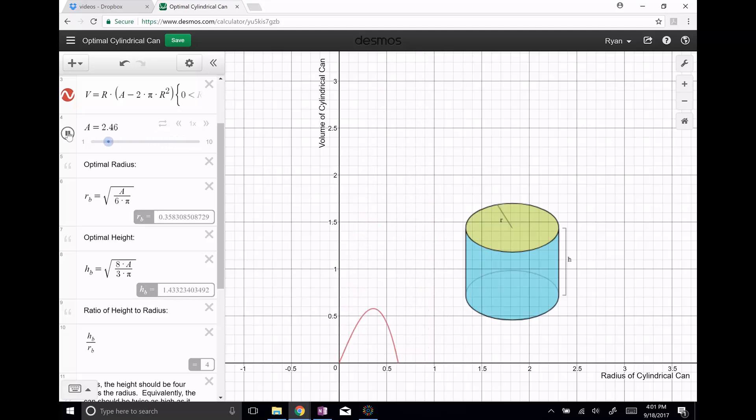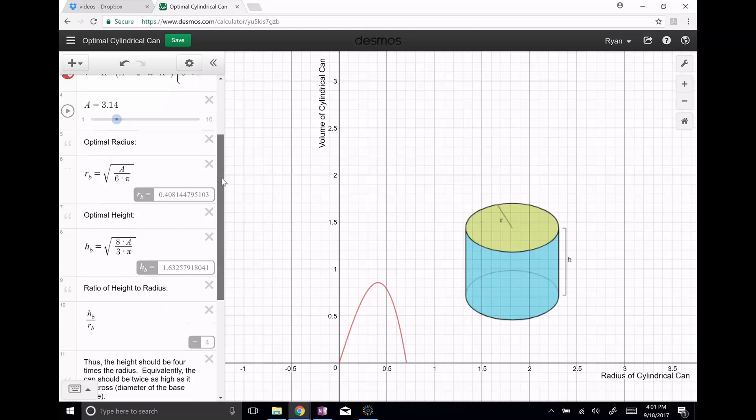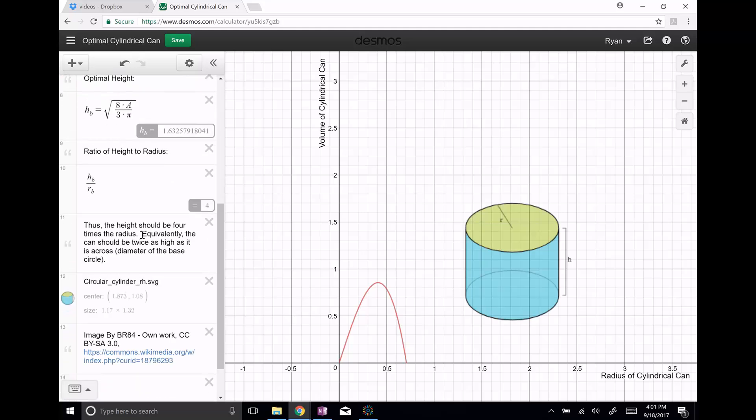So this actually gives us some nice result. So it says, thus the height should be always four times the radius. If you take the ratio between these things, it should be four. That's how you get the most volume for a fixed amount of area.